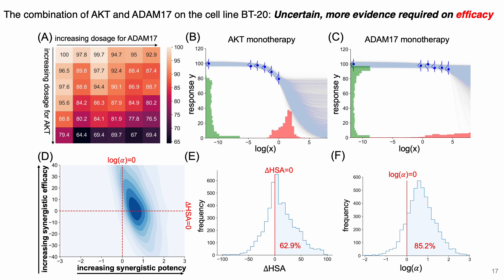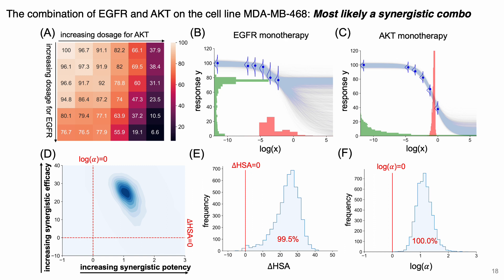Here is a case study showing the output from SIMBA for the combination of AKT and ADAM17 on cell line BT20, which received a positive synergistic score in the original DREAM dataset. However, there is a large underlying uncertainty, especially in terms of synergistic efficacy, suggesting the need to design more experiments before making any decision on whether the combination is truly synergistically efficacious. In contrast, another combination shows strong evidence of being strongly synergistic in terms of both potency and efficacy, with a probability of nearly 100% for both quantities according to our model.